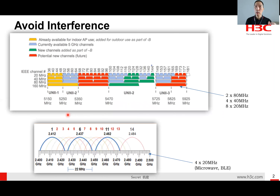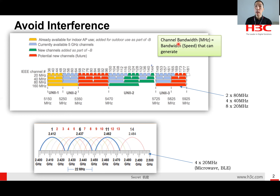Before I talk about the tri-radio access point, I would like to share two fundamental concepts. First is about interference. Last time I talked about channel bandwidth in 5GHz and 2.4GHz — starting from around 2.4GHz to 2.5GHz, we can have around 420MHz of channel bandwidth. In 5GHz, most countries support around 280MHz or a single 160MHz channel. The bigger the channel bandwidth, the bigger the speed — that's the basic Wi-Fi concept.